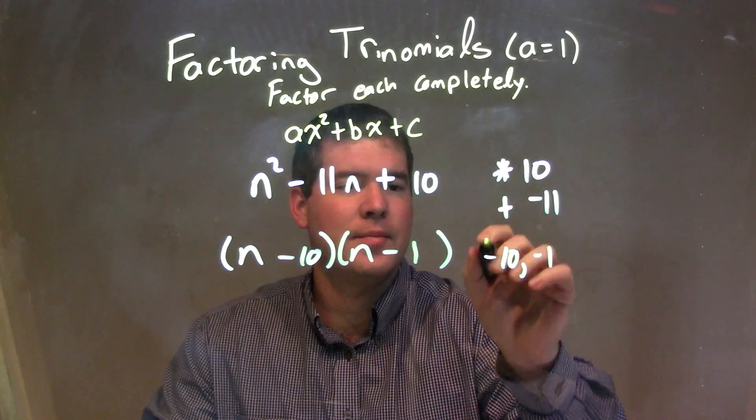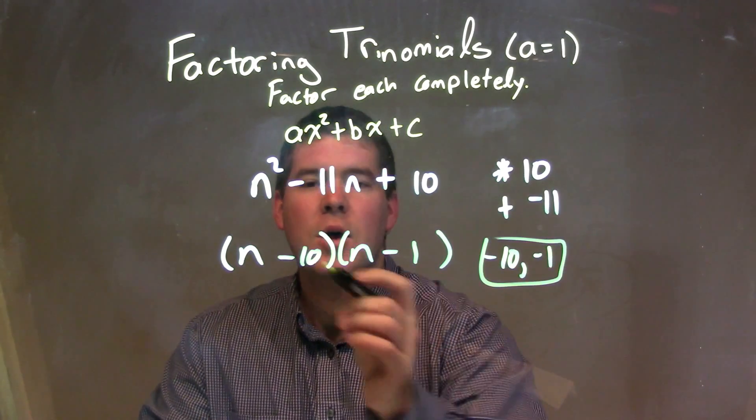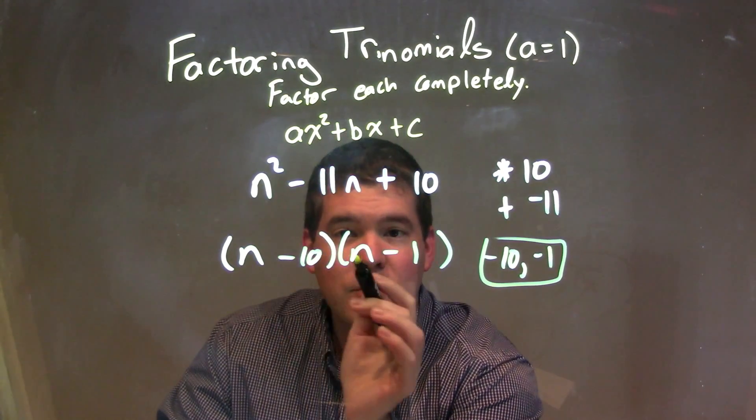So we take the two numbers that we found right here. The numbers we found, we're going to put them in there and break them apart here - it's two different n values.